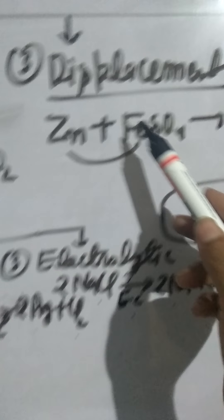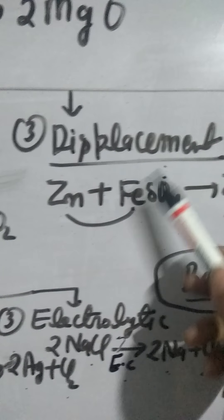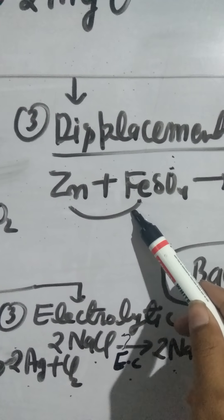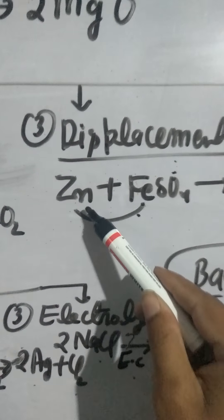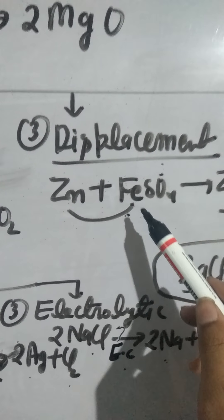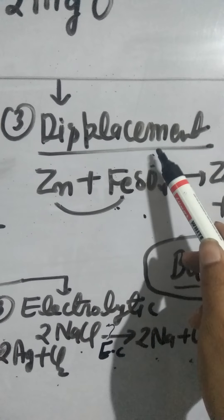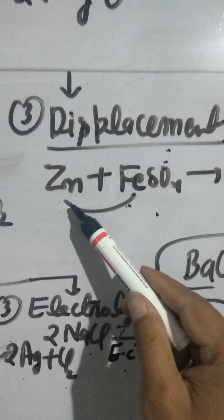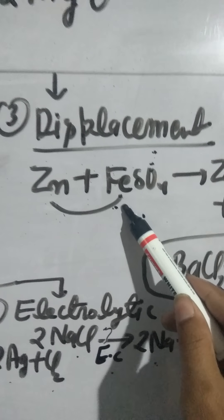Displacement reaction: those reactions in which a more reactive element displaces a less reactive element from its salt solution are called displacement reactions. Here zinc is more reactive, and zinc displaces less reactive iron.